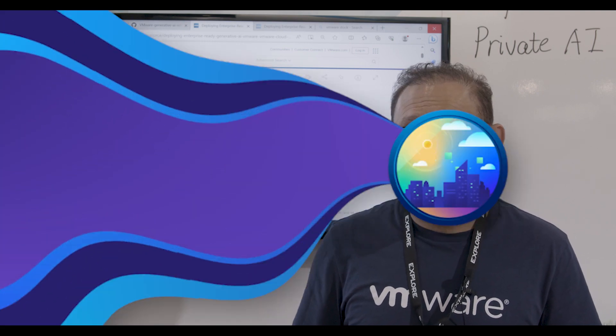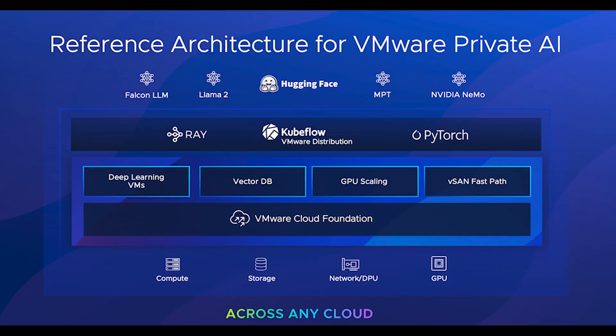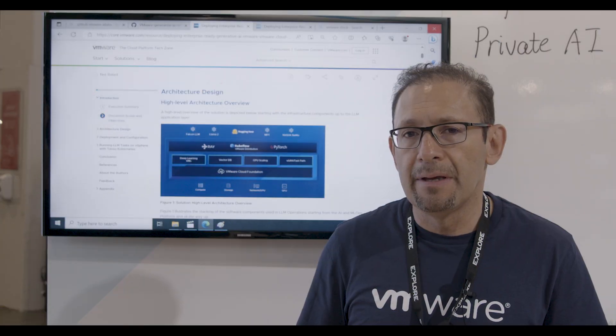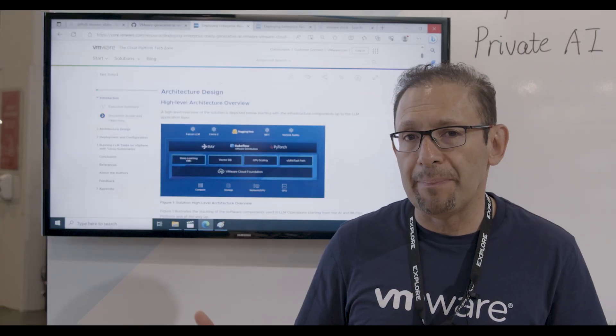The second example is about taking the fine-tuned LLM and serving it on a scalable cluster powered by Kubernetes and Ray, so all your applications can make use of the LLM using an API.